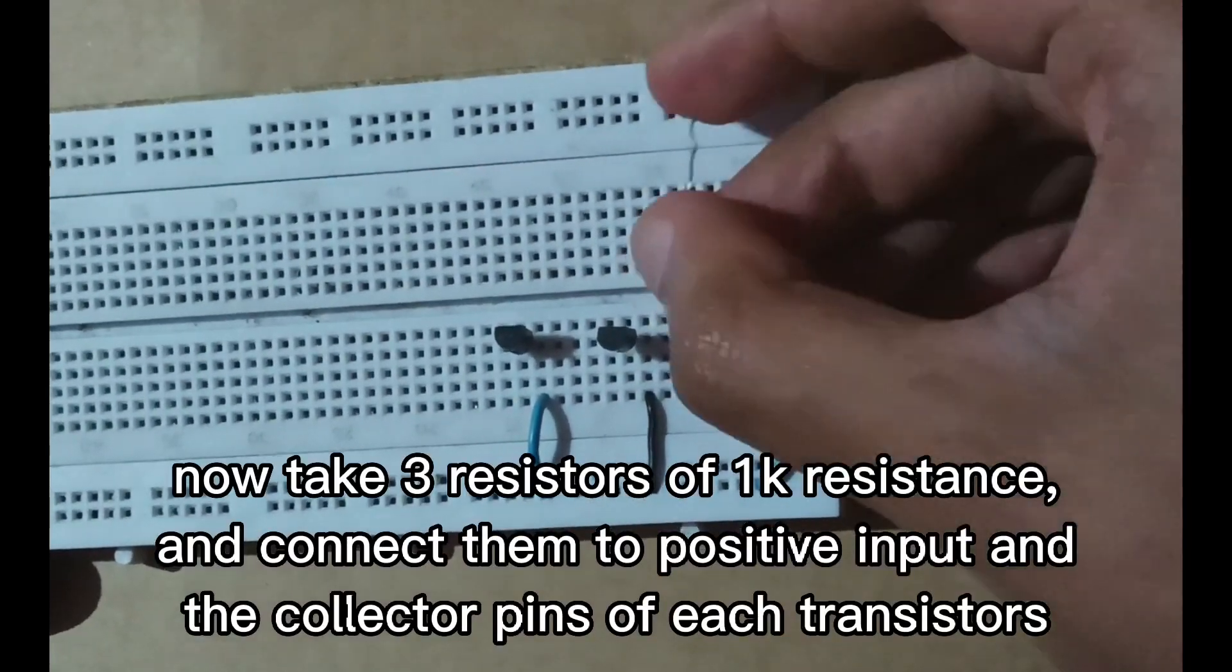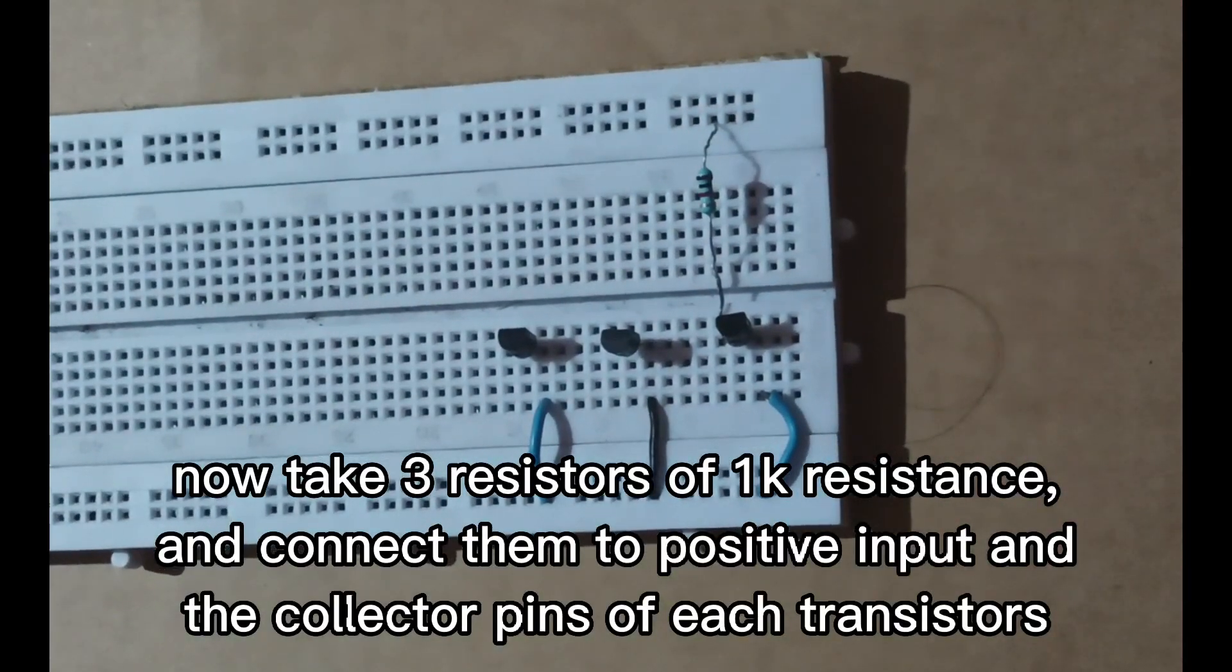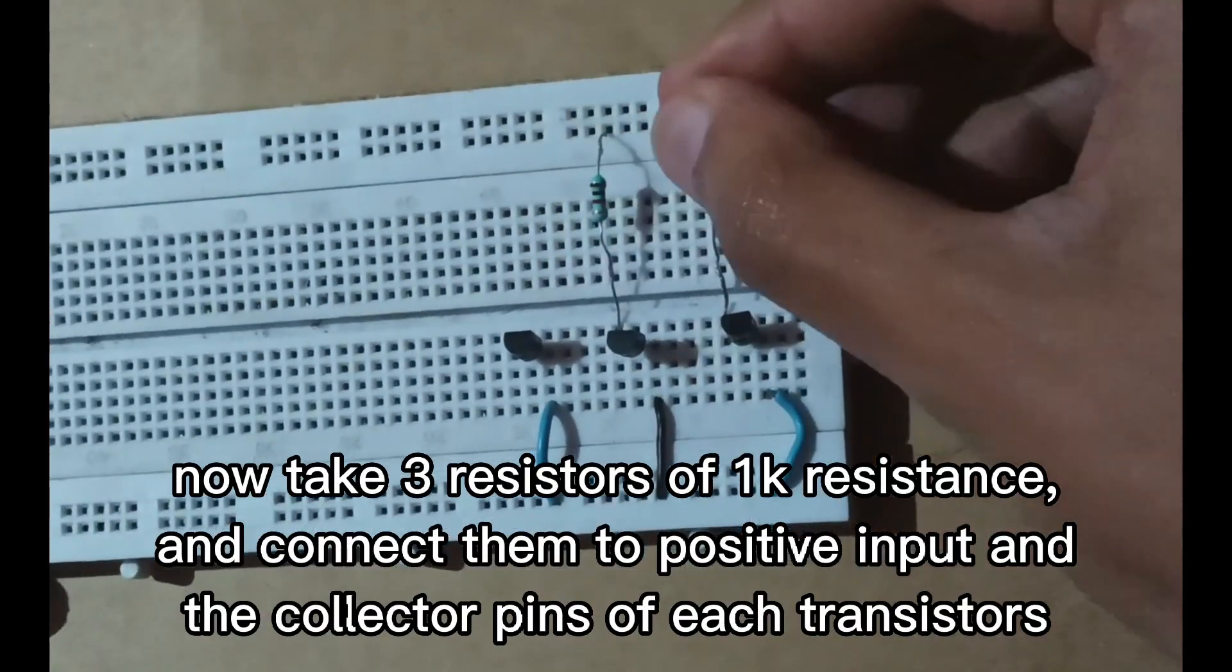Now take three resistors of 1,000 ohm resistance and connect them to positive input and the collector pins of each transistor.